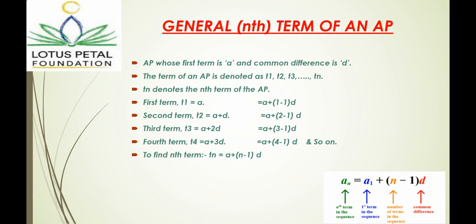First term, which is a, which comes from a plus bracket 1 minus 1 bracket d. Second term, a plus d, which comes from a plus bracket 2 minus 1 bracket d.